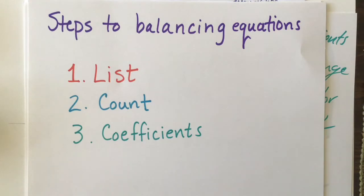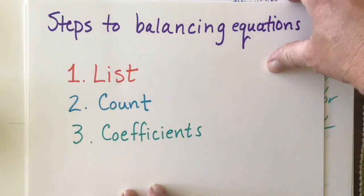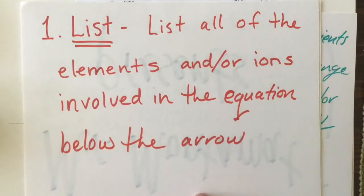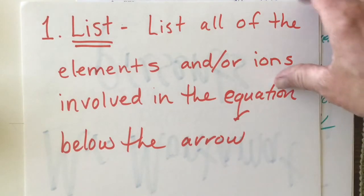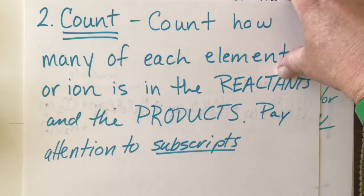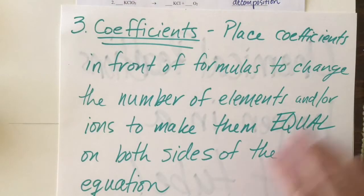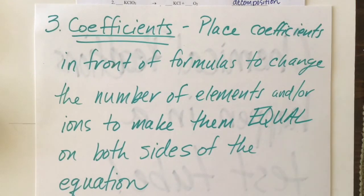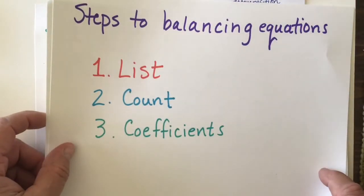Here are the steps to balancing equations. Number one: list — list all of the elements and/or ions involved in the equation below the arrow. Number two: count — count how many of each element or ion is in the reactants and in the products; pay attention to those subscripts. Number three: coefficients — use coefficients to change the numbers such that they are equal in the products and the reactants. So: list, count, coefficients.